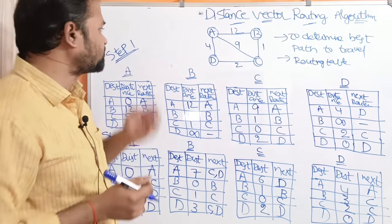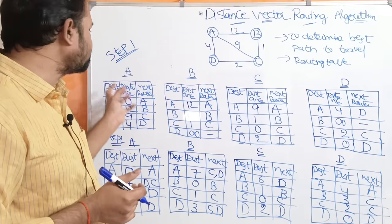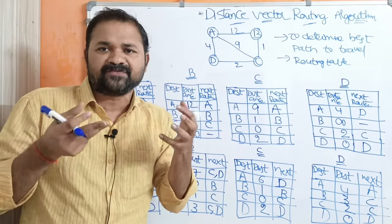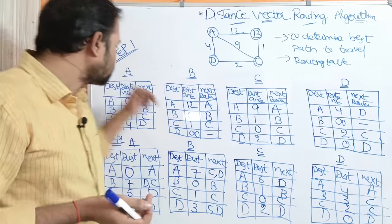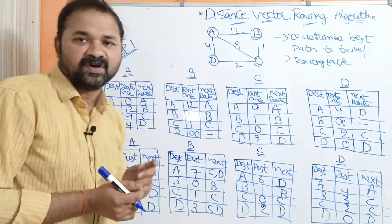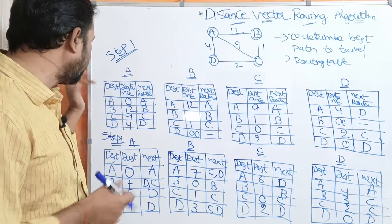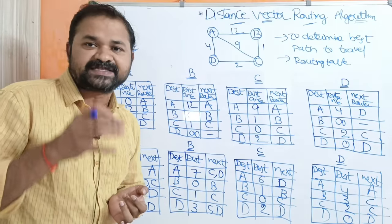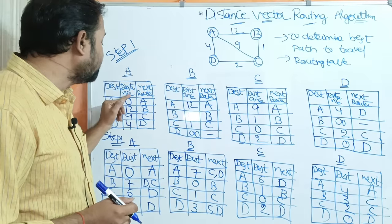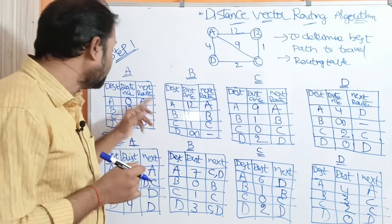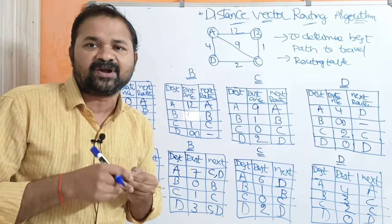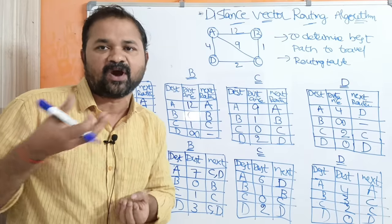Let us see the first step. In step 1, every router will maintain a routing table. So we have routing table A, routing table B, routing table C, and routing table D. Every routing table contains three fields: the first field is destination router, the second field is distance, and the third field is next router. A router can also be called a hop.